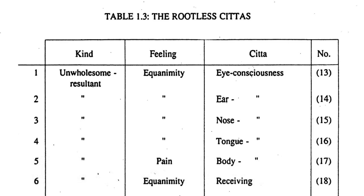Now we want to look at table 1.3: rootless cittas. They are not connected with loba, dosa and moha, or aloba, adosa and amoha. They have no roots.